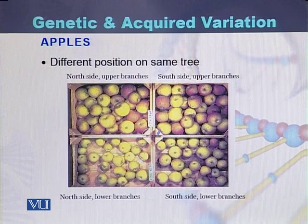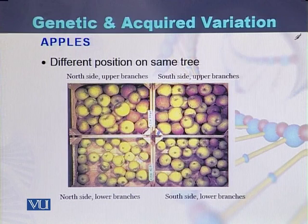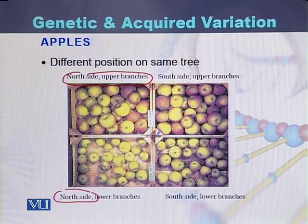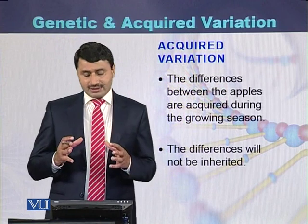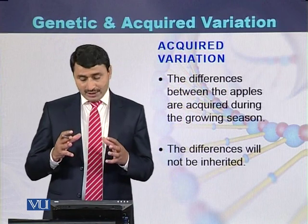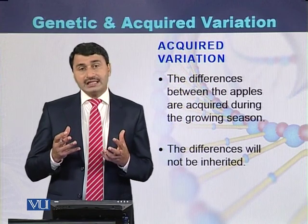Here is an example of acquired variation. We can see different sets of apples. On the left, these are apples obtained from the north side and upper branches, and from the north side and lower branches. On the right, these are apples from the south side and upper branches, as well as the south side and lower branches. These differences are acquired variation — they are acquired during the growing season and are not genetically inherited.